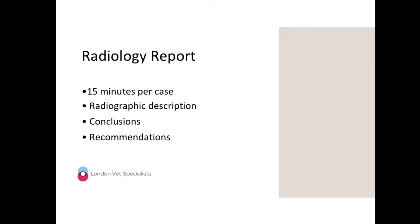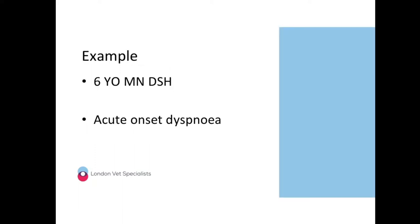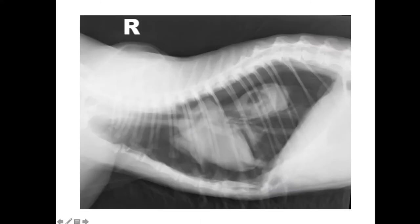Finally, if you have any recommendations or would like to see any other imaging studies that might help you reach a diagnosis, then give some recommendations. Before we begin and I open up the floor, we'll just take a look at an example. This is a case we reviewed in a previous film reading session, so for you regulars you will probably recognize it. It's a six-year-old male neutered domestic short-haired cat that's presented with acute onset dyspnea. For this example, there's only a single radiograph — a right lateral thoracic radiograph.